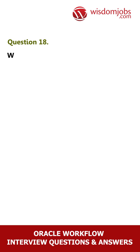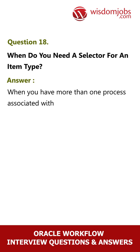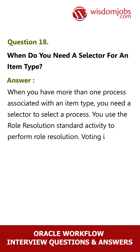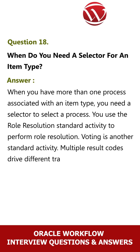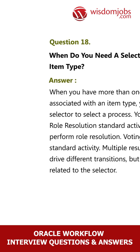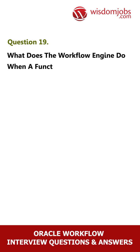Question 18: When do you need a selector for an item type? Answer: When you have more than one process associated with an item type, you need a selector to select a process. Role Resolution is a standard activity to perform role resolution. Voting is another standard activity. Multiple result codes drive different transitions, but this is not related to the selector.